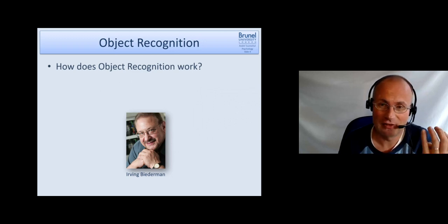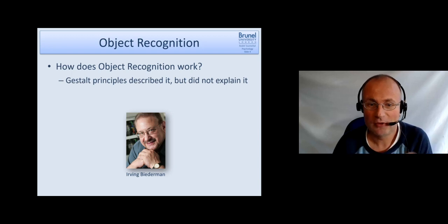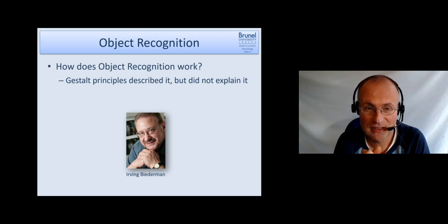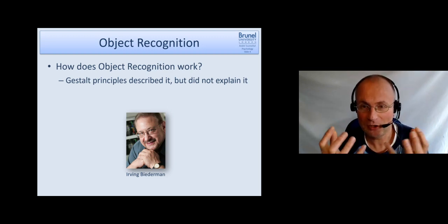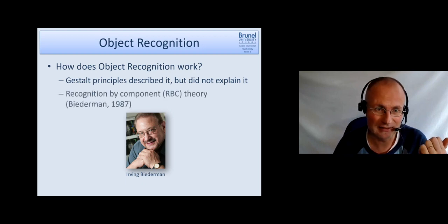Okay so how does the recognition of objects work? And one person who really proposed a major theory here is Irving Biedermann. We have seen that the Gestalt principles described a lot of object recognition, like the law of continuation and things like that. They described it but they didn't explain it.